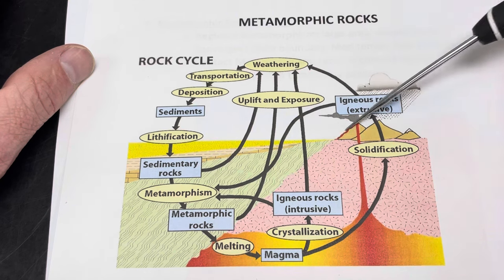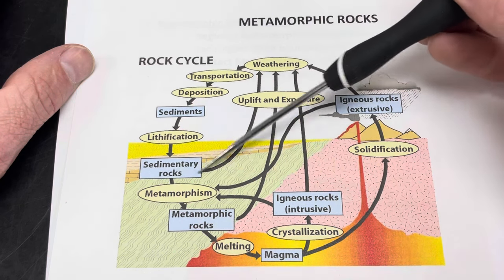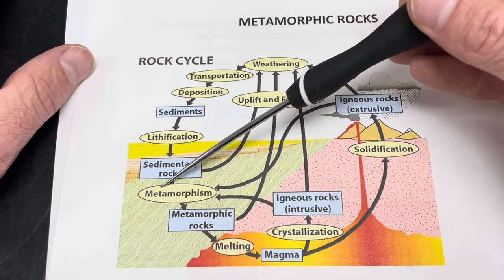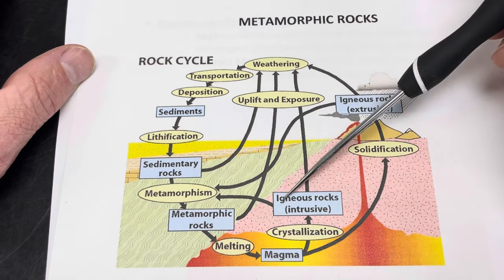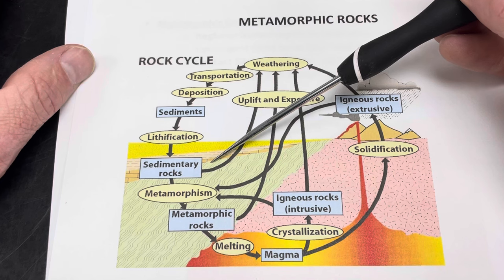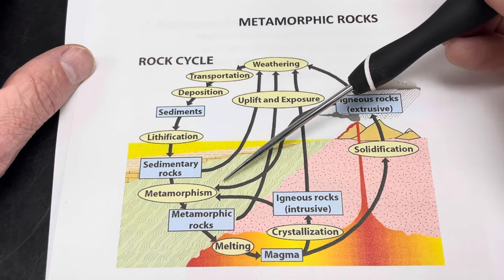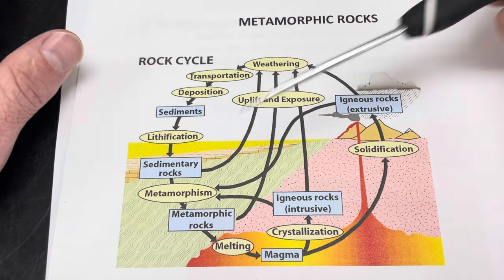Notice that the igneous rocks — both intrusive and extrusive — and the sedimentary rocks: all the little arrows in the rock cycle bring you to metamorphism. So that tells us that any of these given rock types, given the right sort of conditions, can be buried deep enough where they are subjected to the high temperatures and pressures that produce metamorphism.